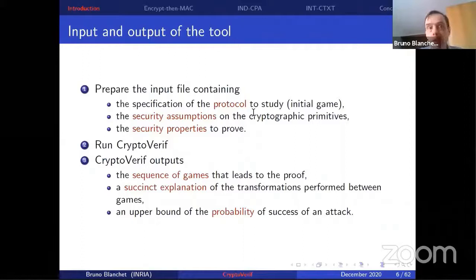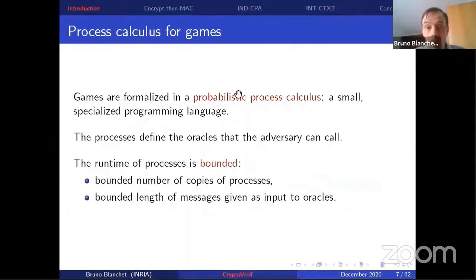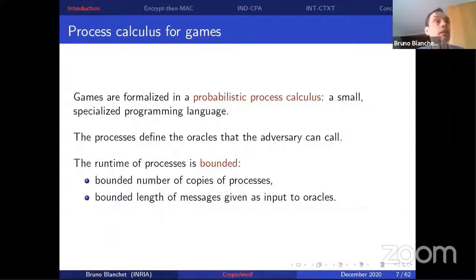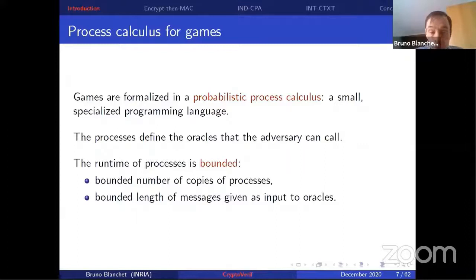Sometimes the proof fails. In that case, CryptoVerif outputs a sequence of games, but the final game does not enable the tool to prove the property. You need to look at that final game and see what transformation you can apply — typically you'll use the interactive mode. To mechanize the proofs, we formalize them in a game probabilistic process calculus, a small specialized programming language. This calculus is probabilistic, and the processes define the oracles that the adversary can call. The runtime is bounded, meaning there is a bounded number of calls to each oracle.